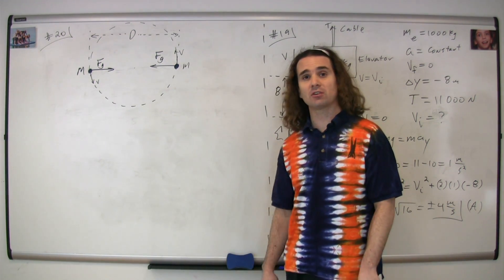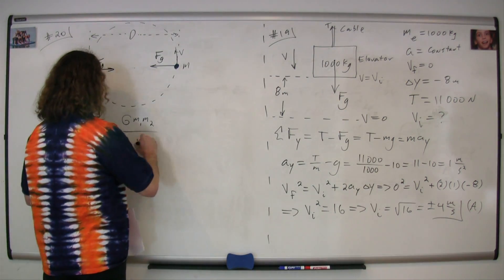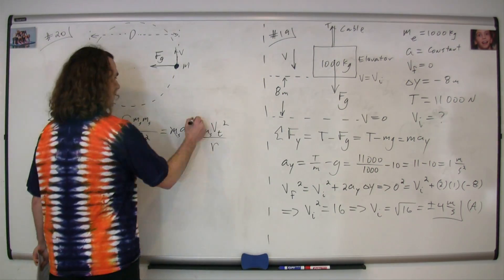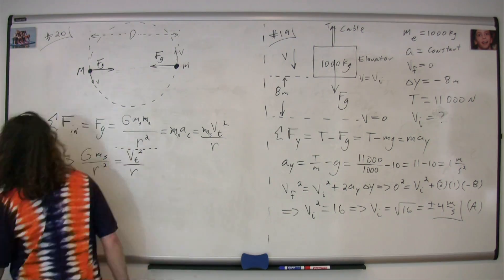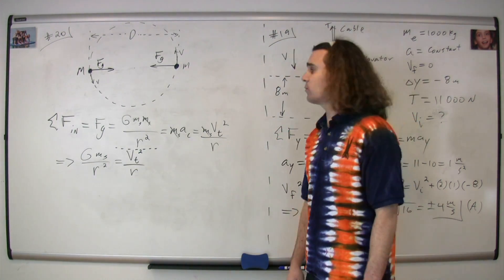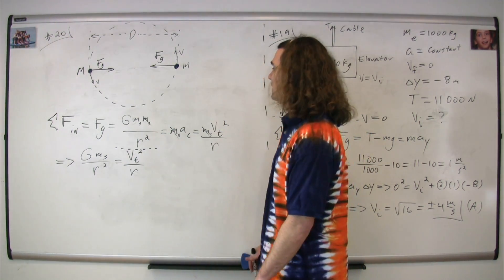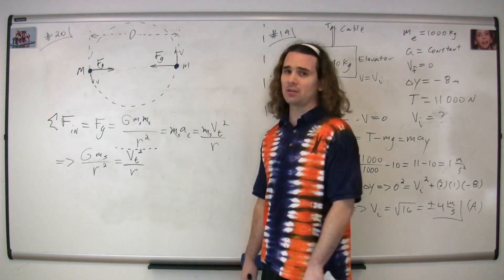Now, because they're moving in a circle, let's sum the forces in the inward direction. Summing the forces on either one of the two stars, we get that the force of gravity, which is inward and therefore positive, equals the mass times the centripetal acceleration.